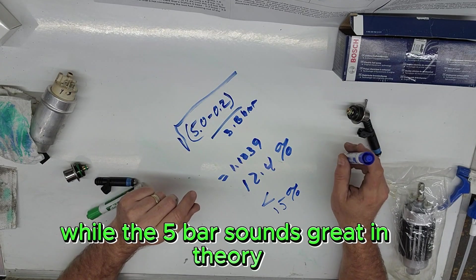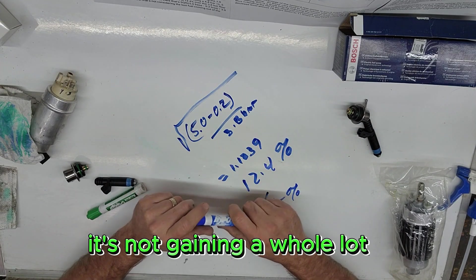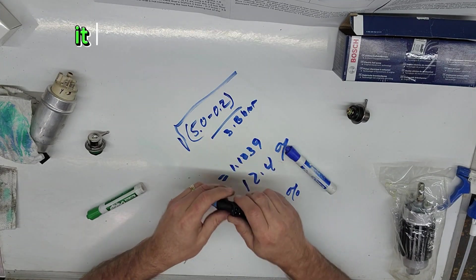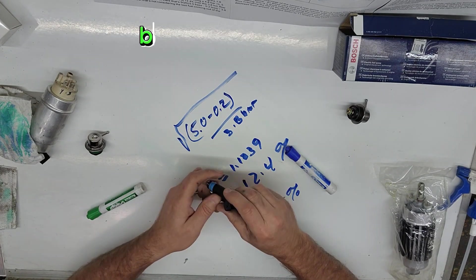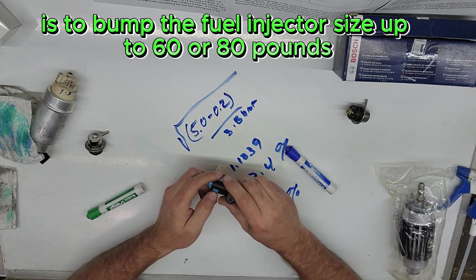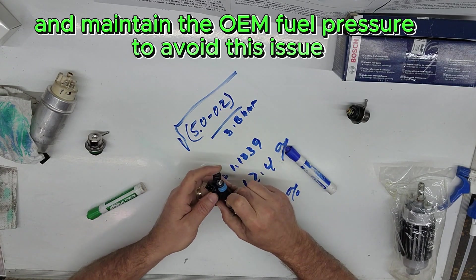While the 5 bar sounds great in theory, in practice, with the stock pump it's not gaining a whole lot. It is gaining, it does provide a flow increase, and can be tuned for more power. But a better way is to bump the fuel injector size up to 60 or 80 pounds, and maintain the OEM fuel pressure to avoid this issue.